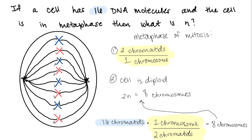So in order to isolate for n, the haploid number, you can divide both sides of this equation by 2 to get n equals 4.